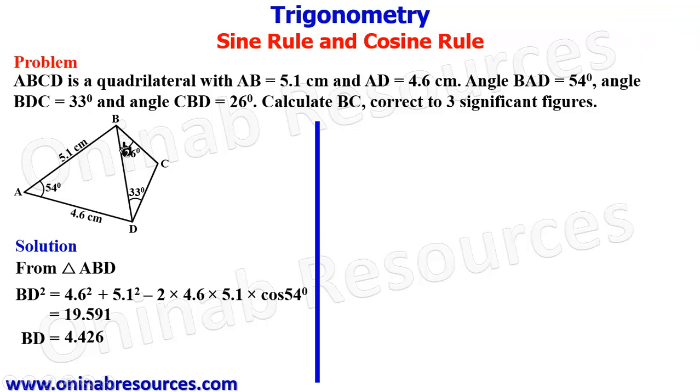Then we go ahead to triangle BCD. From triangle BCD, this is the triangle, we already know BD which we just calculated, so the appropriate thing to do is we have to find angle at C, angle BCD.